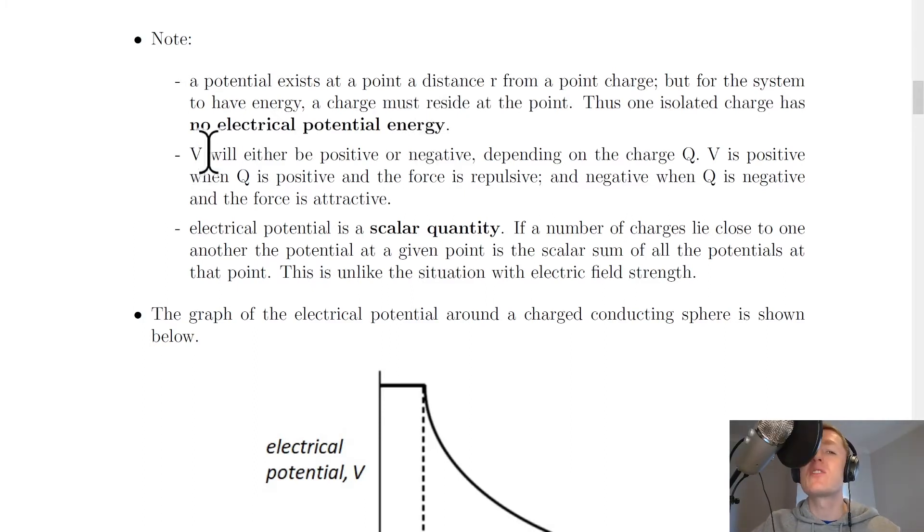The electrical potential V will either be positive or negative, depending on the charge Q. V is positive when Q is positive and the force is repulsive. And negative when Q is negative and the force is attractive.